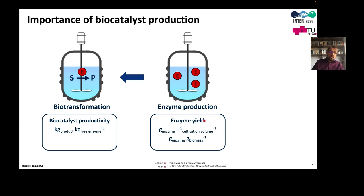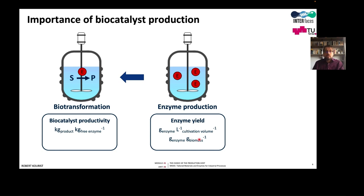In the biotransformation itself we have the biocatalyst productivity, and the cost of the free enzyme lies in the enzyme production. Here we also have an enzyme yield, which means grams of enzyme per liter of cultivation volume and also grams of enzyme per gram of biomass. Typically with a microorganism we can achieve cell dry weight densities from a few grams per liter up to perhaps 100 or 120 grams per liter, and it is also important how much enzyme is contained in this biomass.